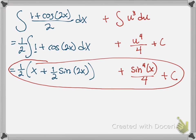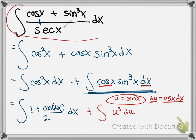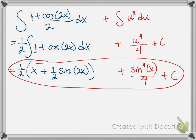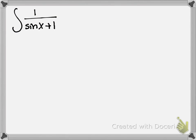That was the final answer for the original problem — the integral of (cosine x plus sine cubed x) over secant. Let's see if we can do another one. Let's do one more trig identity.